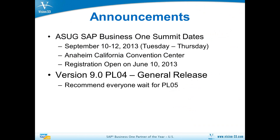The ASUG SAP Business One Summit will be ready for registration probably within the next two or three days. You should be getting an announcement soon, but if not, you can find it on the ASUG.com website. We'll be sending out an email announcement to all of our customers. That conference is September 10th to 12th in Anaheim, California — exactly one city block from Disneyland. Registration is opening very soon.